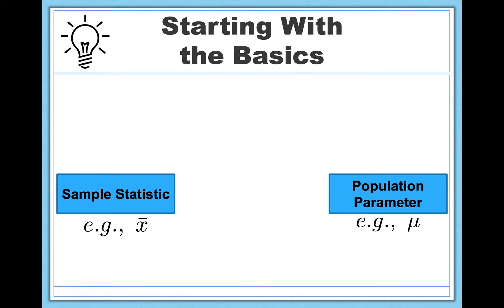It would look something like this. Let's say you're interested in a population parameter. You want to estimate, for example, or approximate what a population mean is, mu. Well, the way we do this is by collecting a sample and getting a sample mean, x-bar. In that case, x-bar is our best guess about what mu is.